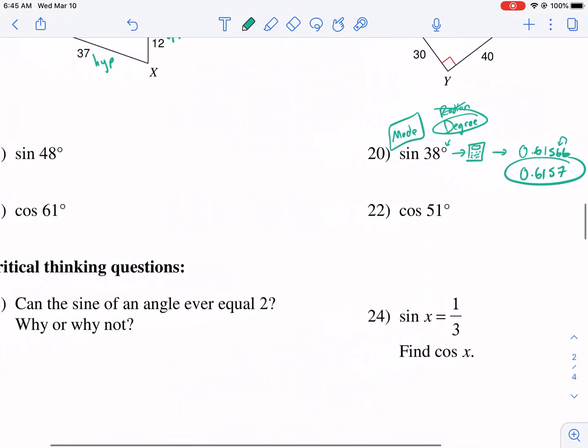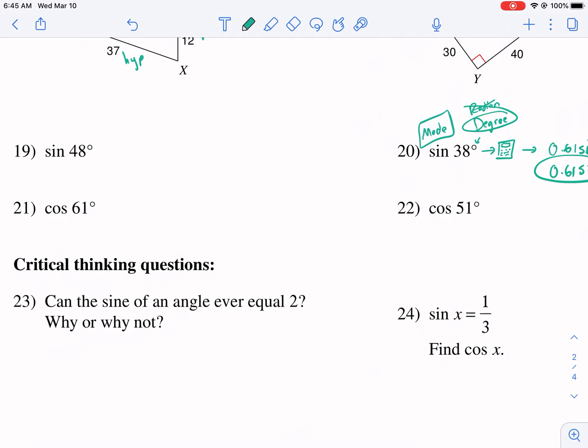And you're going to do the same thing for all of these. So cosine of 61, same deal. Cosine of 61. Make sure you're in degrees. I got 0.48480. So if I round to the nearest 10,000th, it'd be just 4.8 like this. There's my final answer.